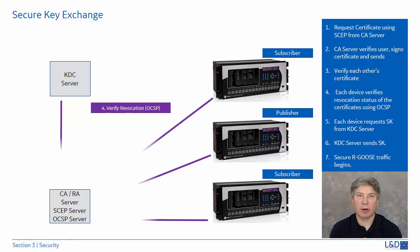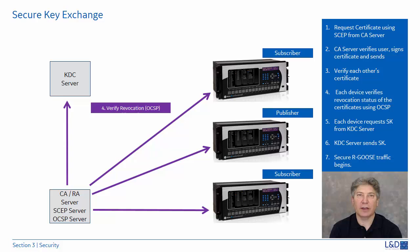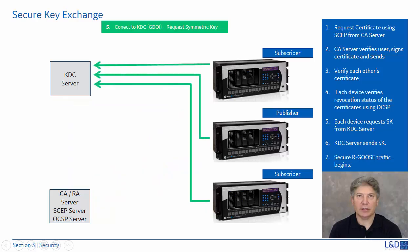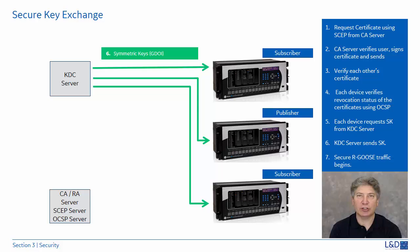Next, each party — the KDC, publisher, and subscribers — contacts the registration authority using the Online Certificate Status Protocol. They send their own certificate and the other device's certificate for validity and revocation status. Each device, whether subscriber or publisher, also holds a copy of the KDC certificate and sends both copies for verification to the registration authority. If verification succeeds, the devices contact the KDC for a symmetric key. The KDC sends a symmetric key to the devices, which is used for signing and encrypting the routable GOOSE message. As per the standard, these keys must be updated at least once every two days through re-keying — either via a pull mechanism where each device repeats the exchange steps, or a push mechanism where the KDC server sends new keys to all group members in one multicast message.